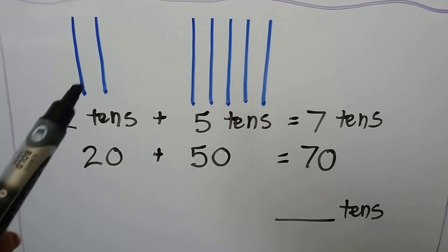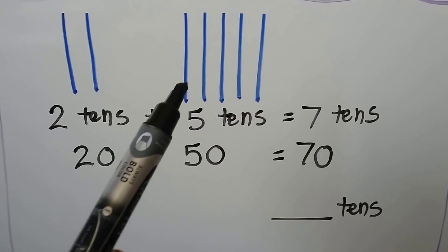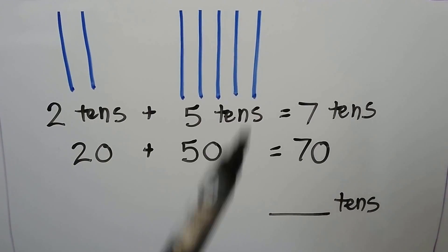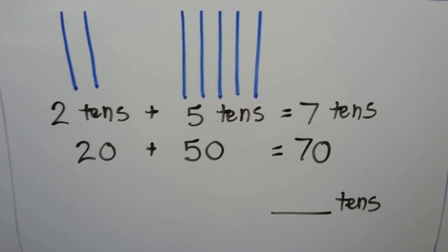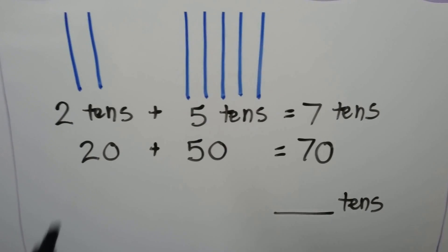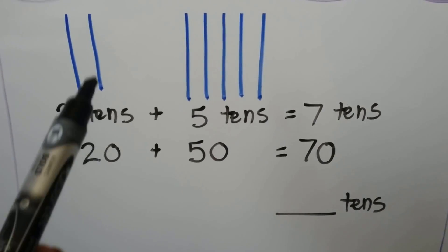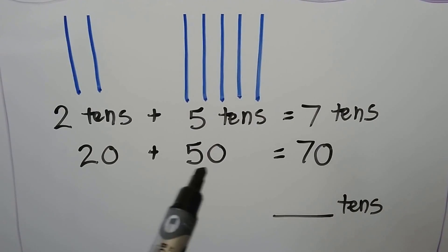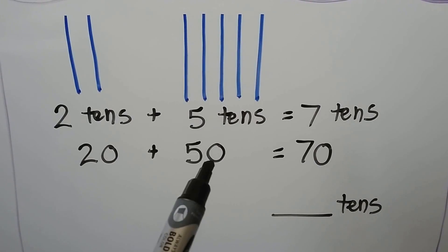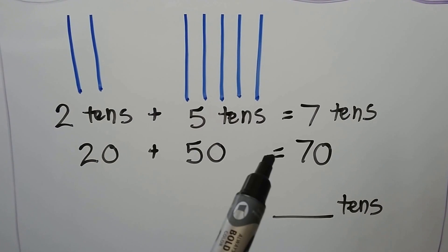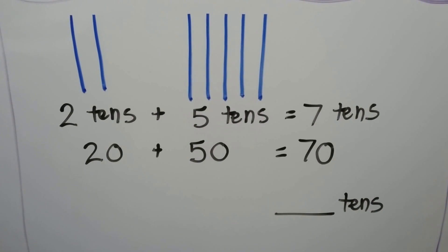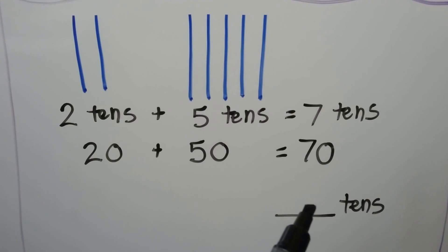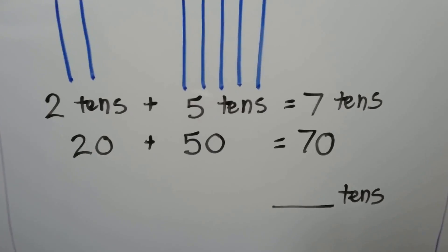Two tens plus five tens is equal to seven tens. Twenty plus fifty is equal to seventy. Seventy is seven tens.